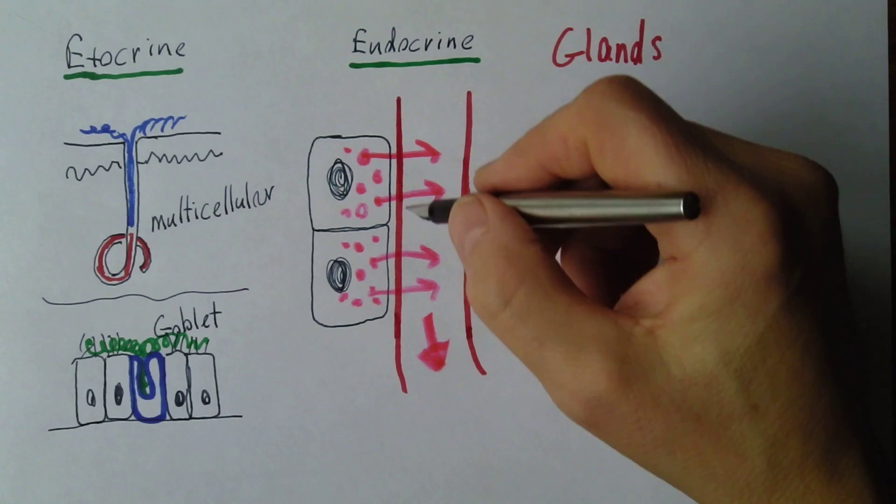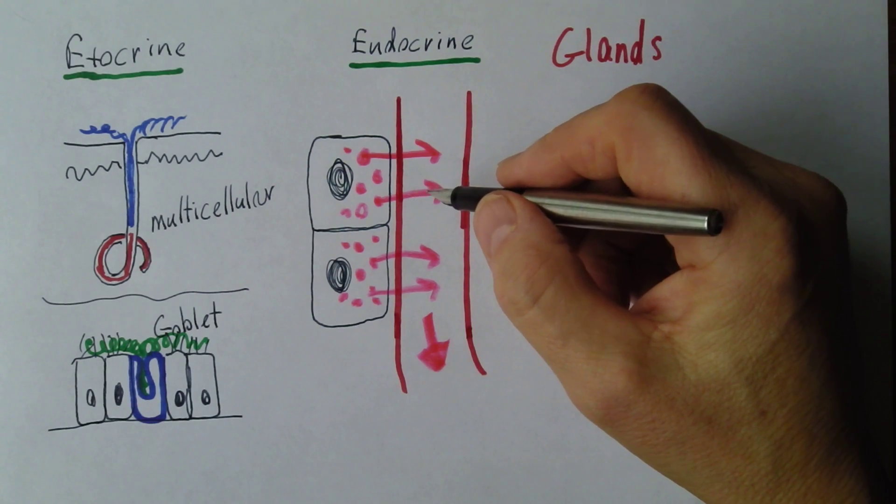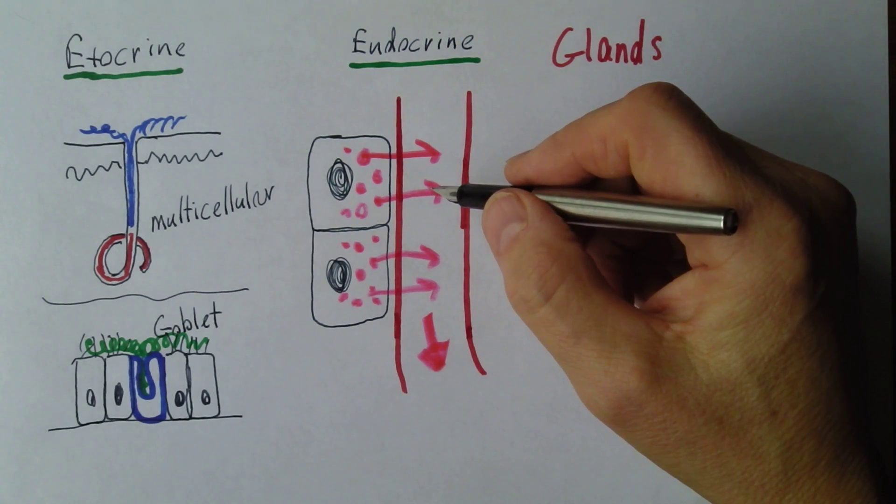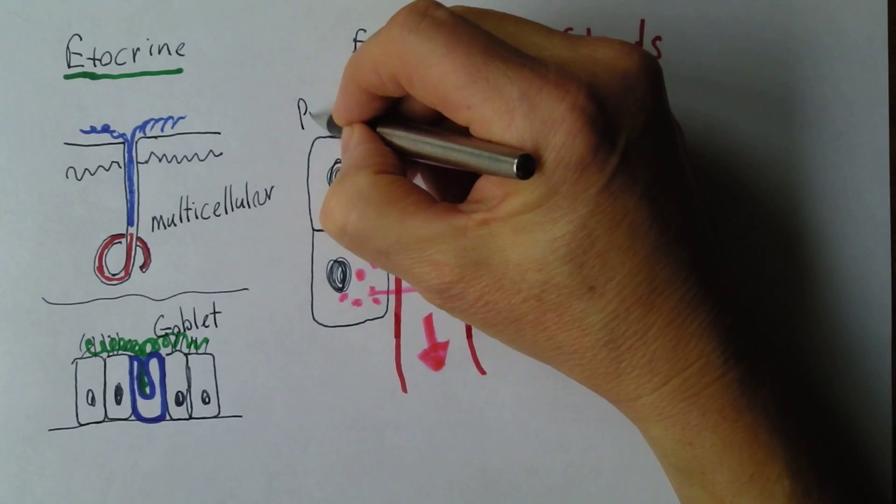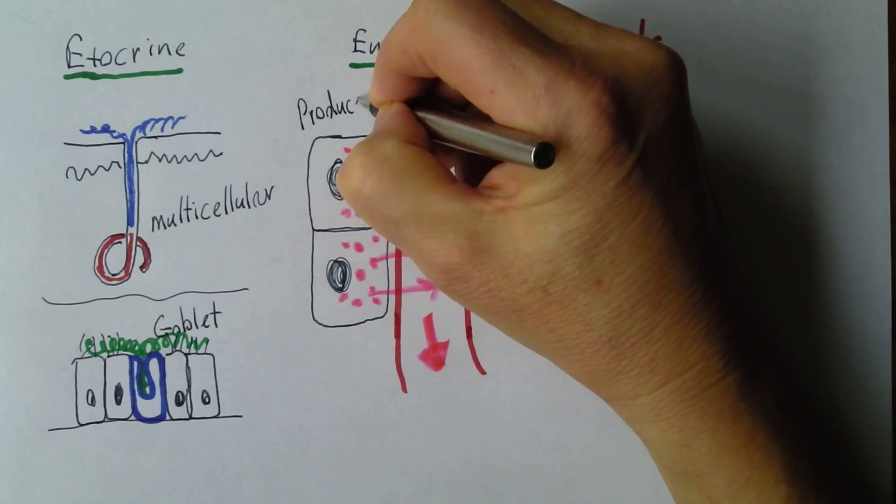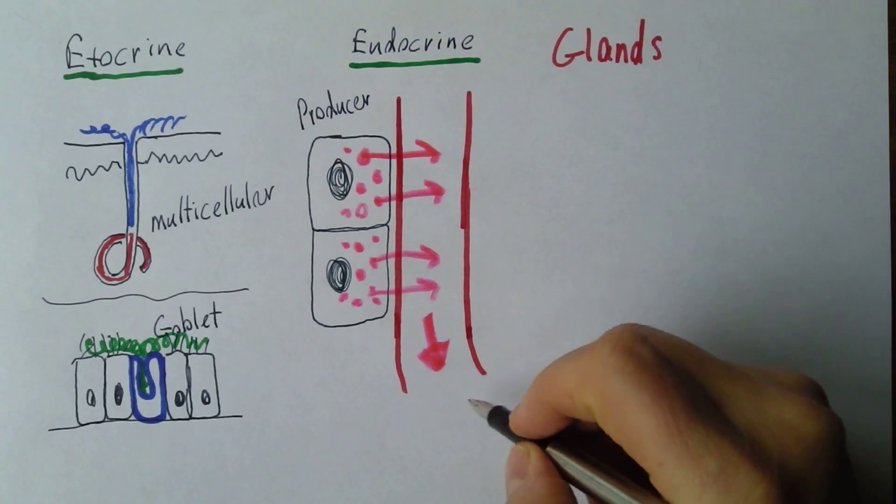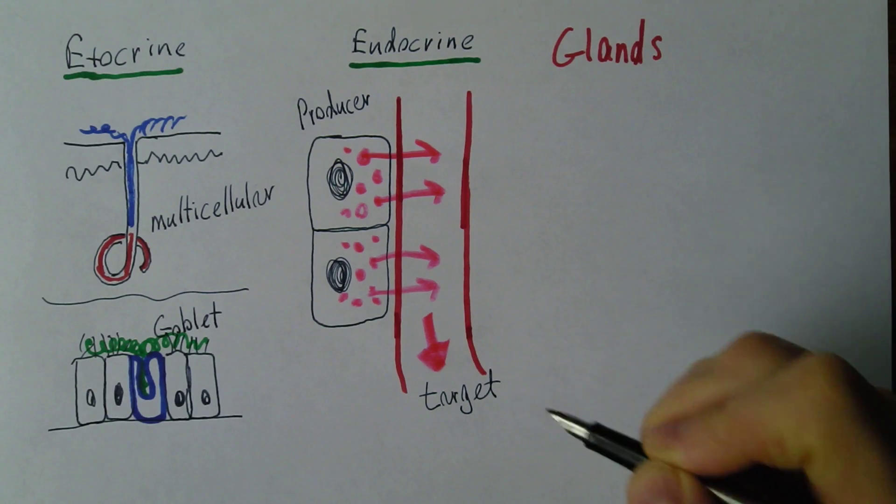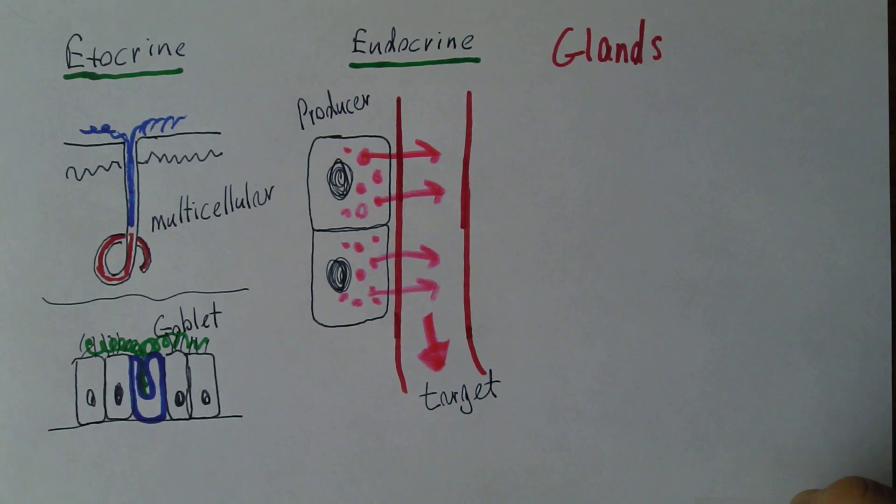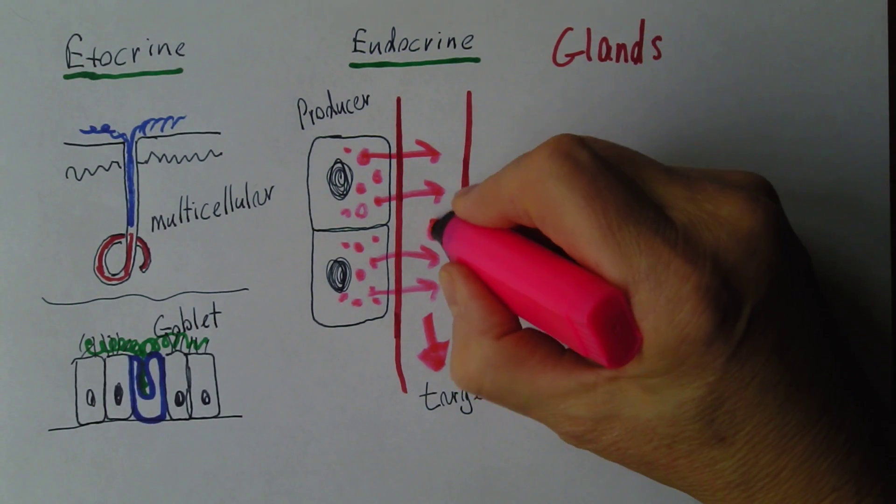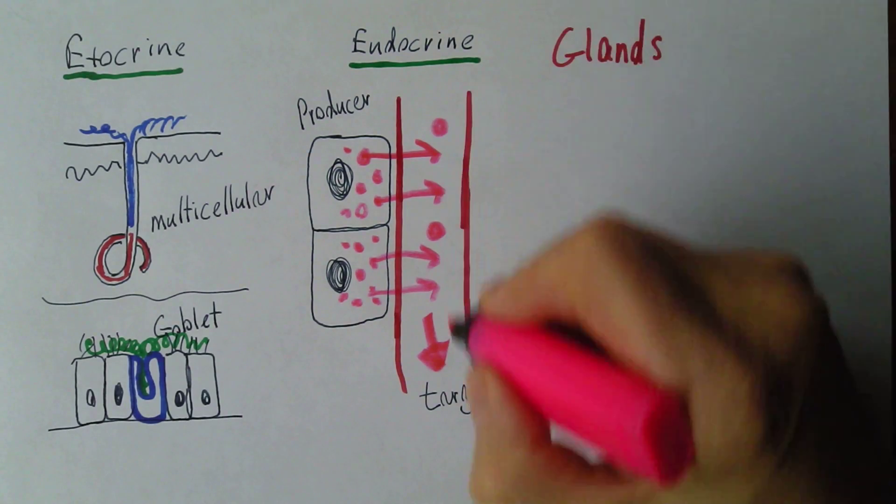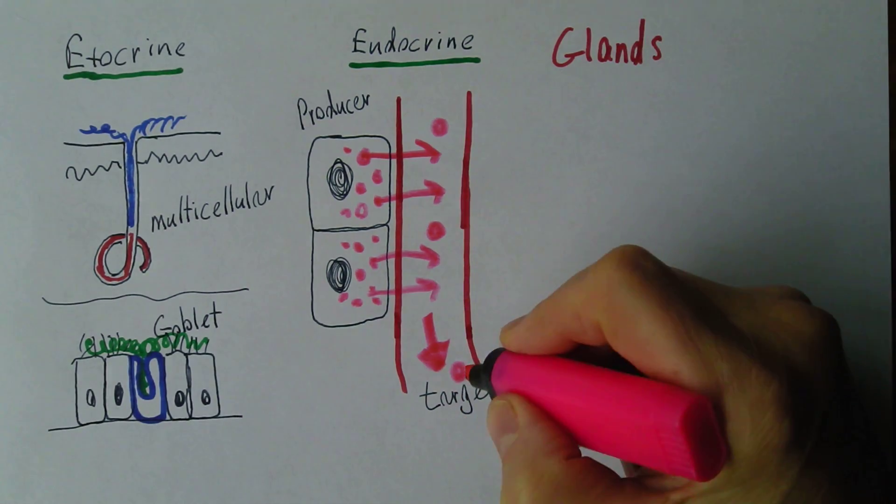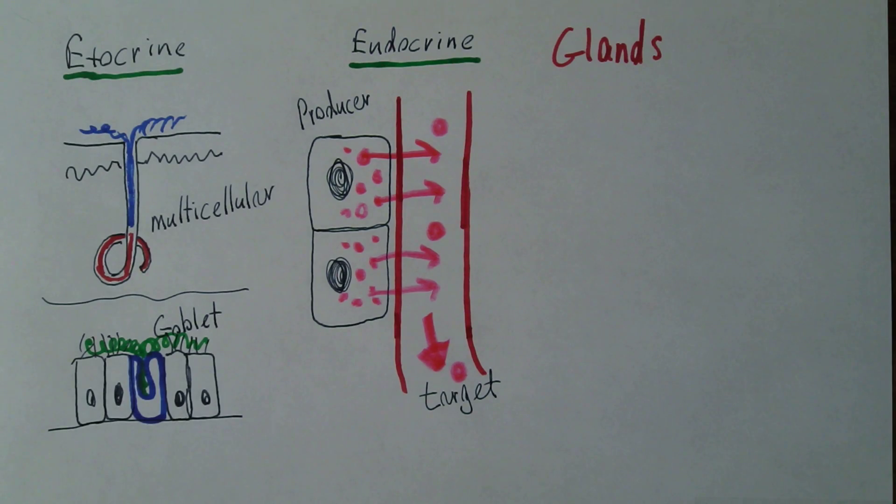And that means that we can have a signal molecule traveling around the body. So these are the producer cells, and they will go off to a target cell. There will be target cells around the body where this particular endocrine product will interact with another tissue. And here we have the endocrine product.